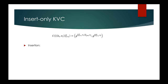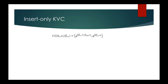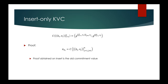This key value commitment supports very efficient insertion: with just three exponentiations, one multiplication, and one hash computation, we can update the state of the commitment on an insert. The proof corresponding to a key value pair, akin to many prior constructions, is going to be the key value commitment of every other element in the map. This means that the proof obtained on an insert is simply the old commitment value. The proof update is a further insertion, and proof verification is also an insertion — you take the proof, insert your proposed key value pair, and check that you get the commitment back.